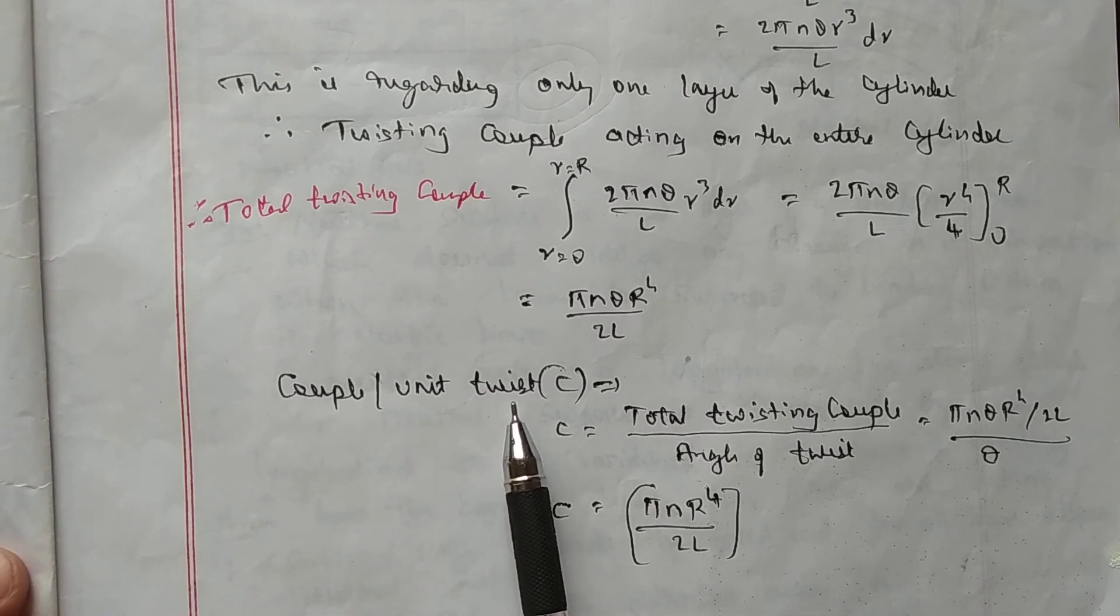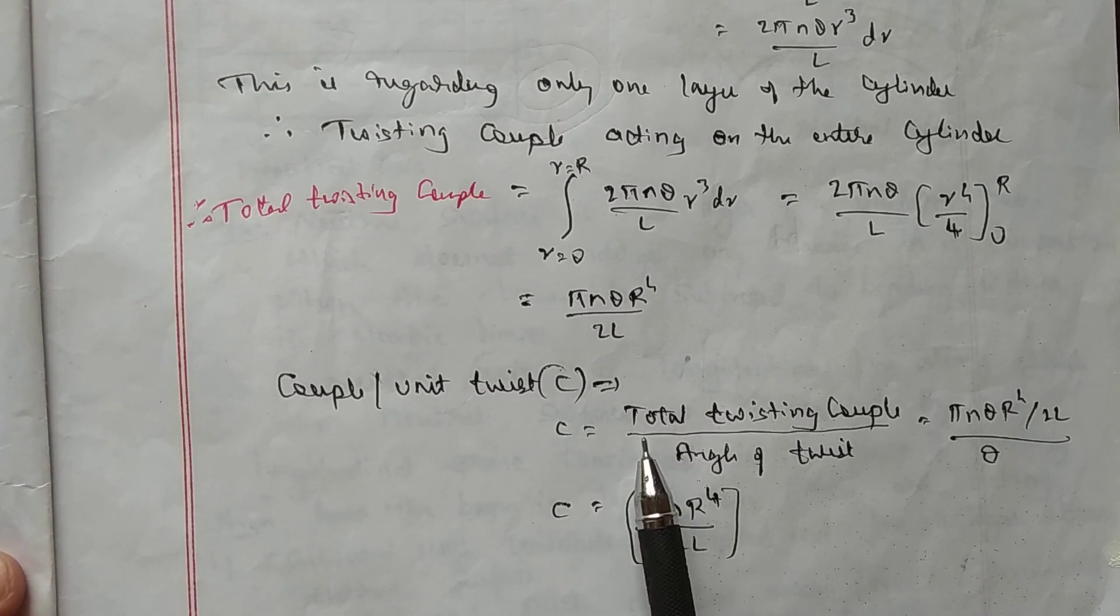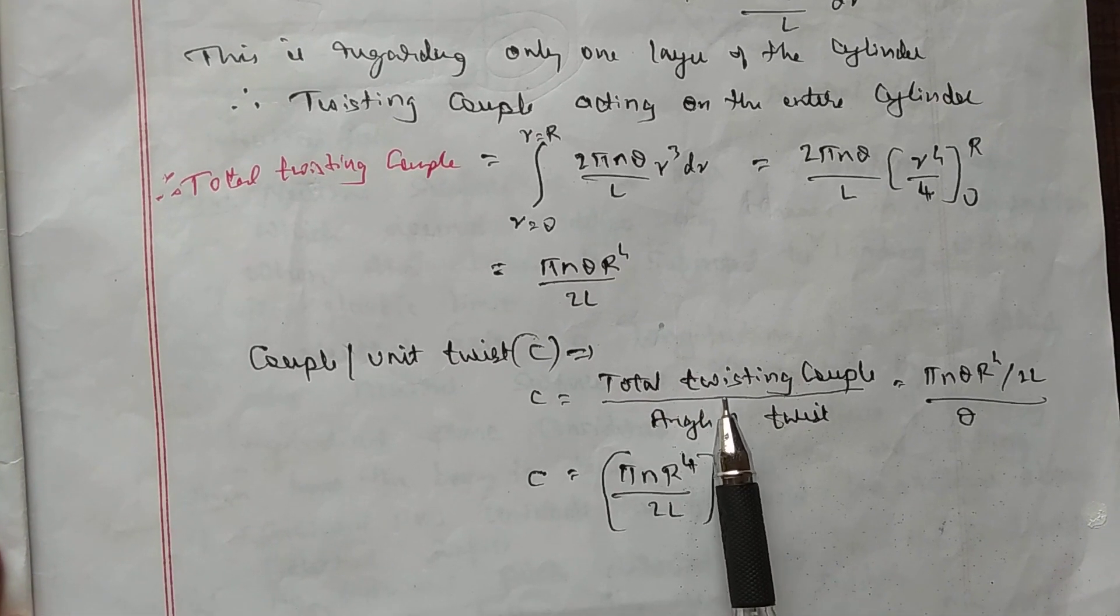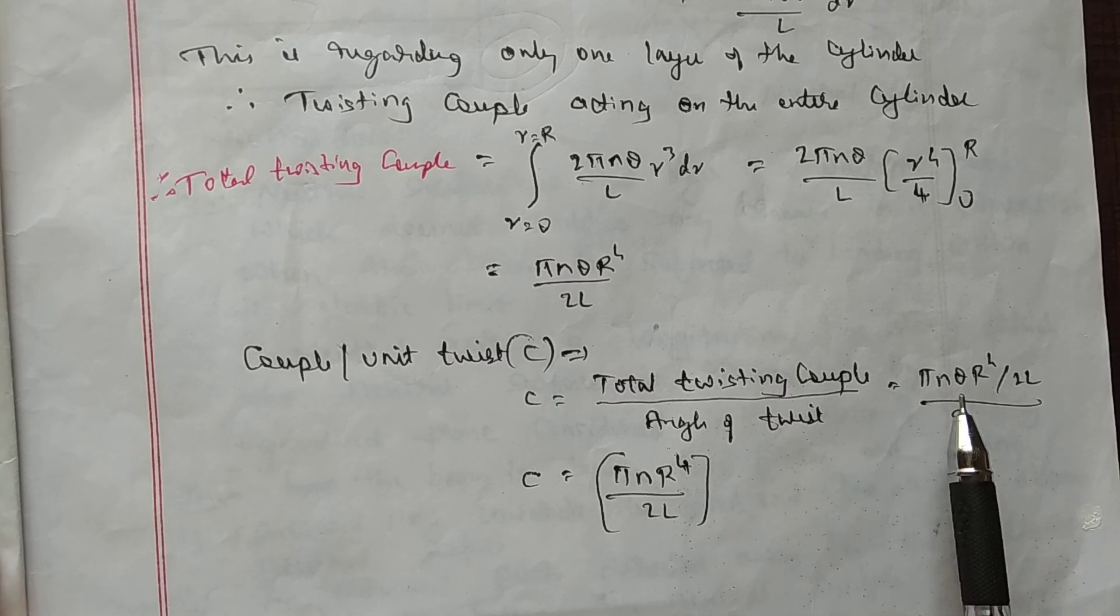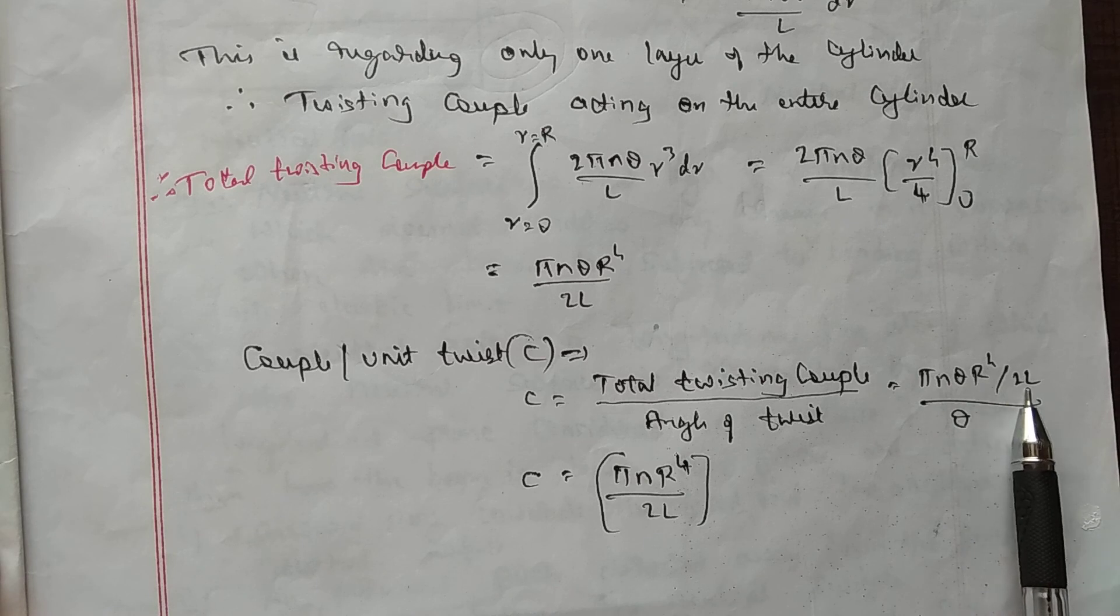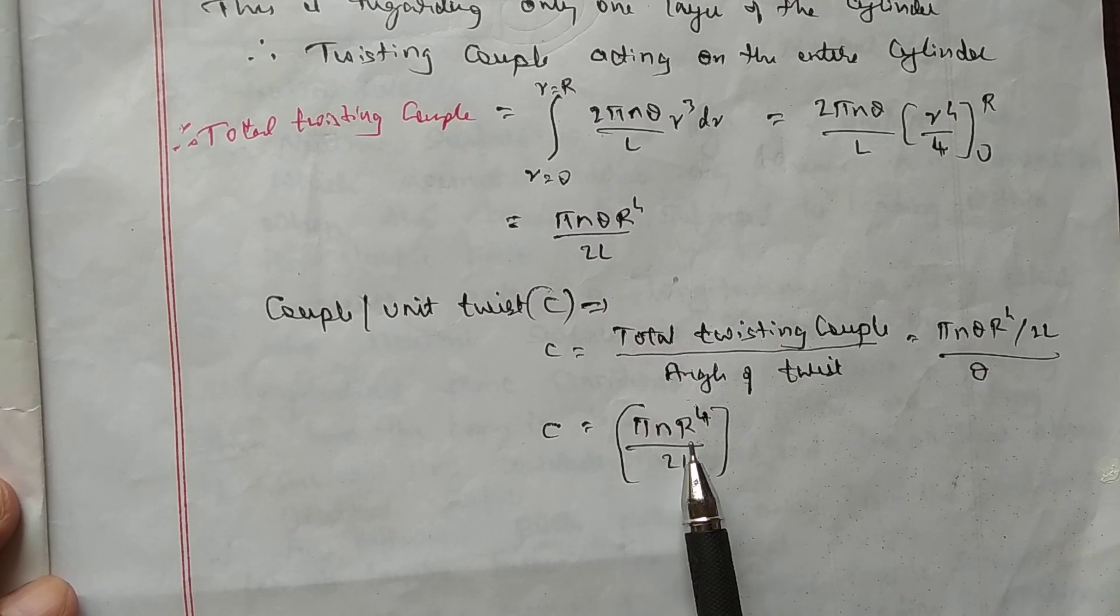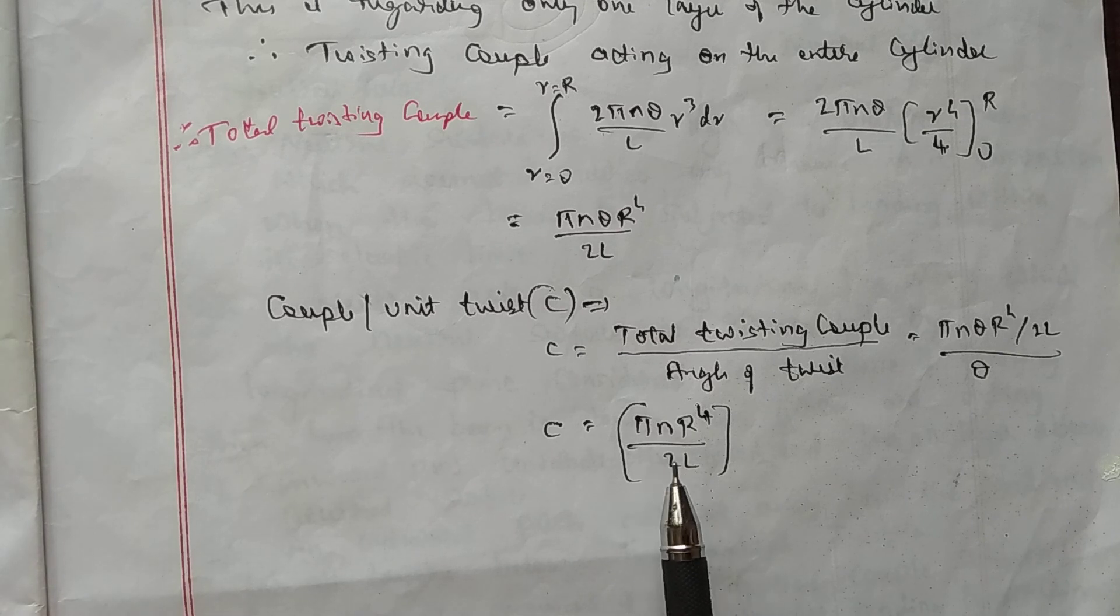Now, couple per unit twist C is given by the formula total twisting couple divided by angle of twist. That is nothing but pi N theta R to the fourth by 2L divided by theta. Therefore, that is going to be pi N R to the fourth by 2L.